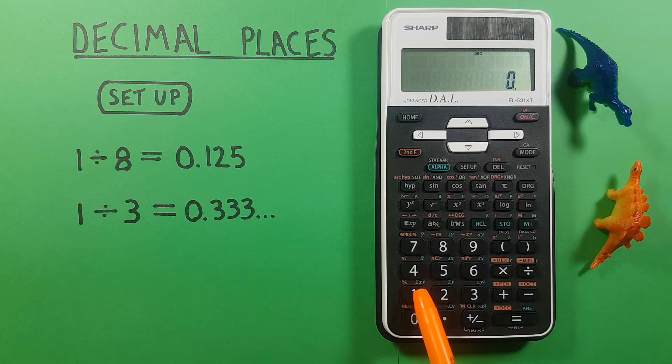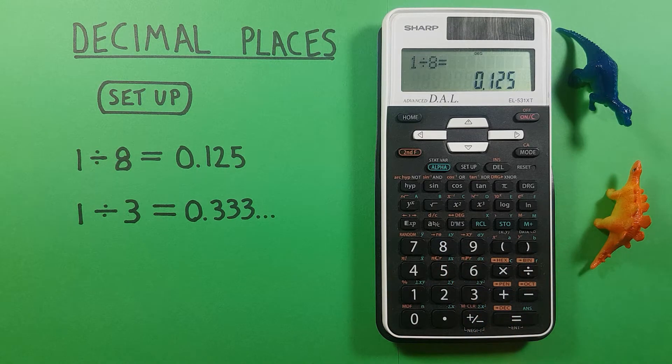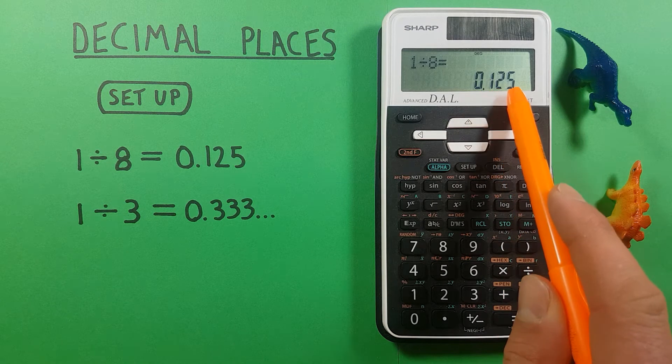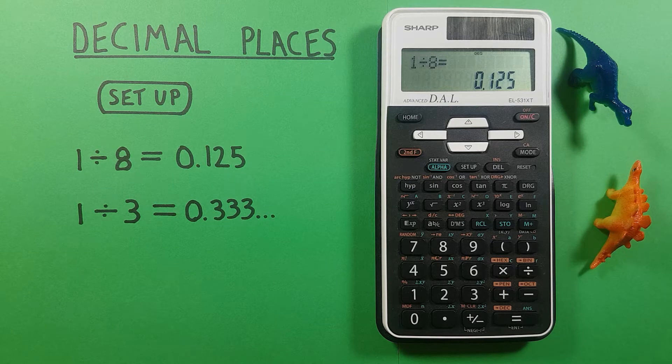So if we do 1 divided by 8 for example, press equals, we see we get a result of 0.125 which is the correct answer. But what if we wanted to get this rounded to two decimal places?